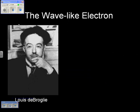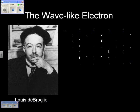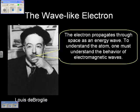The next important figure is Louis de Broglie. That is his shortened name — his name is actually about five or six names long; he was a prince. He said the electron propagates through space as an energy wave. To understand the atom, one must understand the behavior of electromagnetic waves.